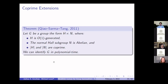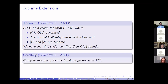We also obtained results for a more general family: coprime extensions where the normal Hull subgroup N is abelian and the complement has a bounded number of generators. In 2011, Chow, Sarmat, and Tang gave a polynomial time algorithm for this family. Using WL, we need only a constant number of rounds, improving the complexity-theoretic upper bound from P to TC0. Recall that semi-direct products are determined up to isomorphism by the factors H and N, as well as the conjugation action of H on N.